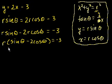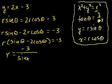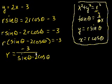Now divide both sides by that expression, and you're left with r equals negative 3 divided by (sine of theta minus 2 cosine of theta).